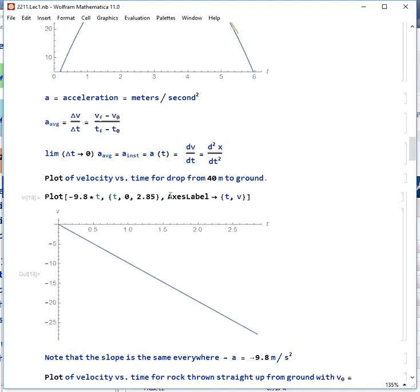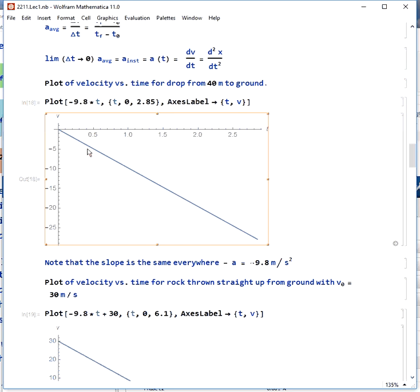If we plot velocity versus time for a drop from 40 meters to the ground, we get this line starting at zero velocity and ending at about negative 30 meters per second. And if you look, the slope of this is the same everywhere. We have a slope of negative 9.8 meters per second squared.